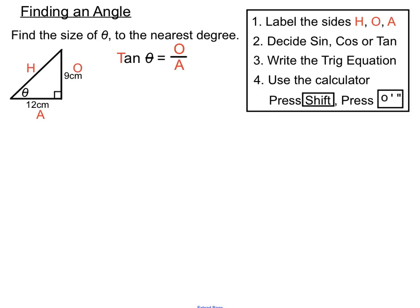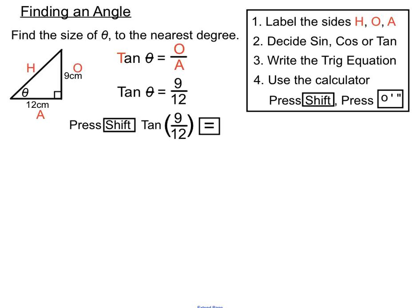Once we've chosen the tangent ratio, we fill in our tangent equation with the numbers from this question. We don't know theta yet, so we write tan θ on the left-hand side. We do know the opposite, which is 9, and the adjacent, which is 12. Now we type into our calculator: press Shift Tan — it's almost like we're working backwards to find the angle — then type in 9 over 12.